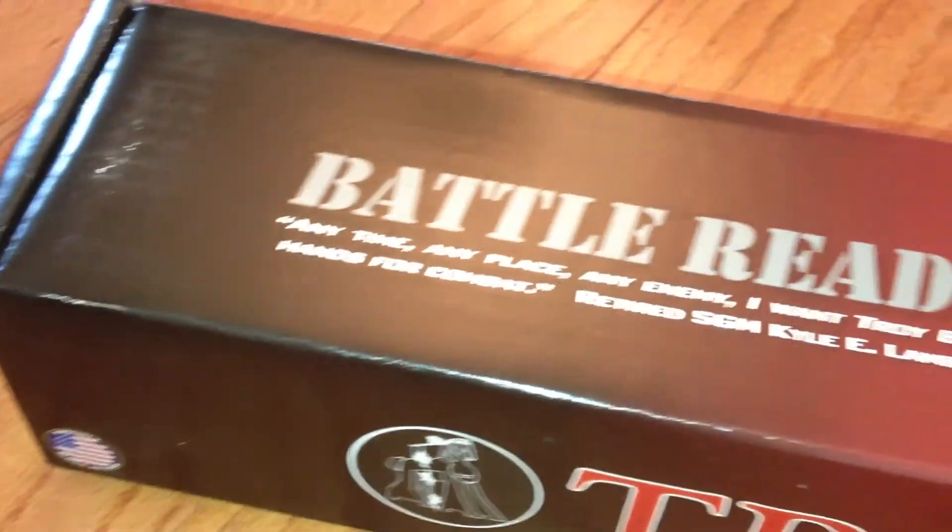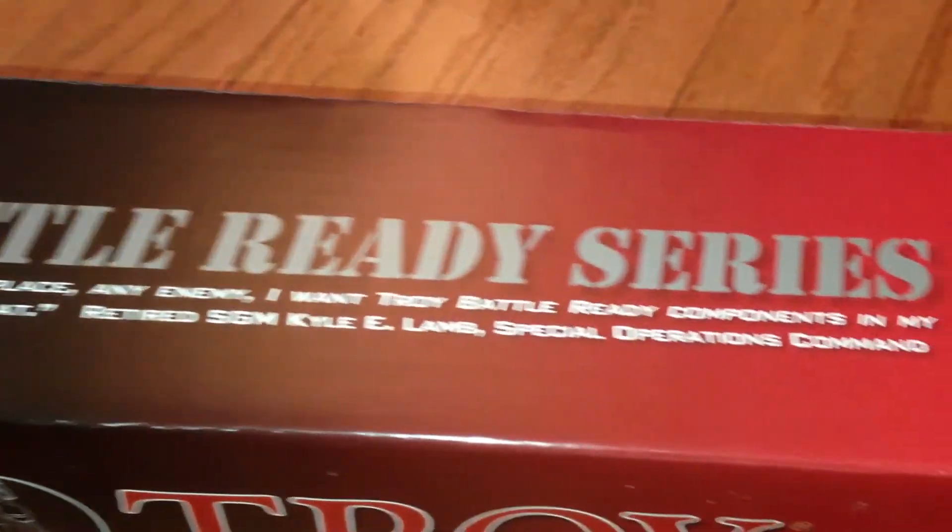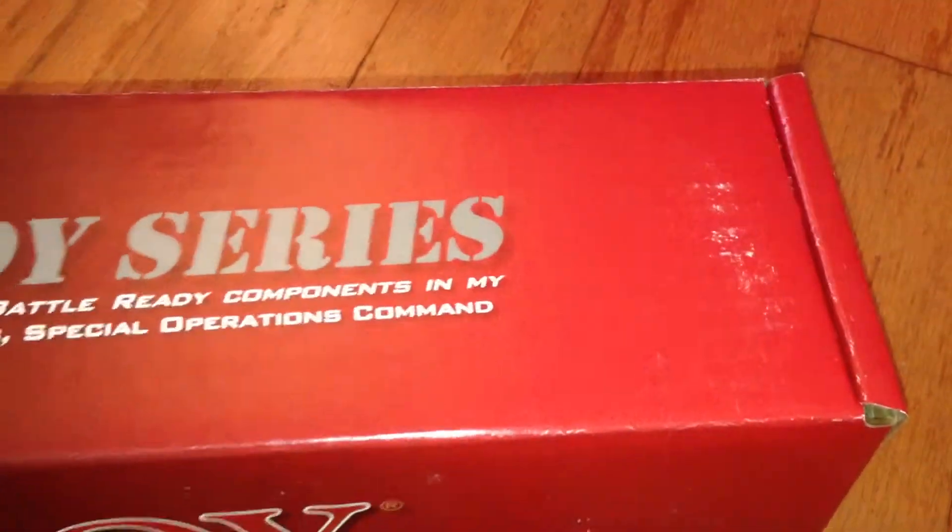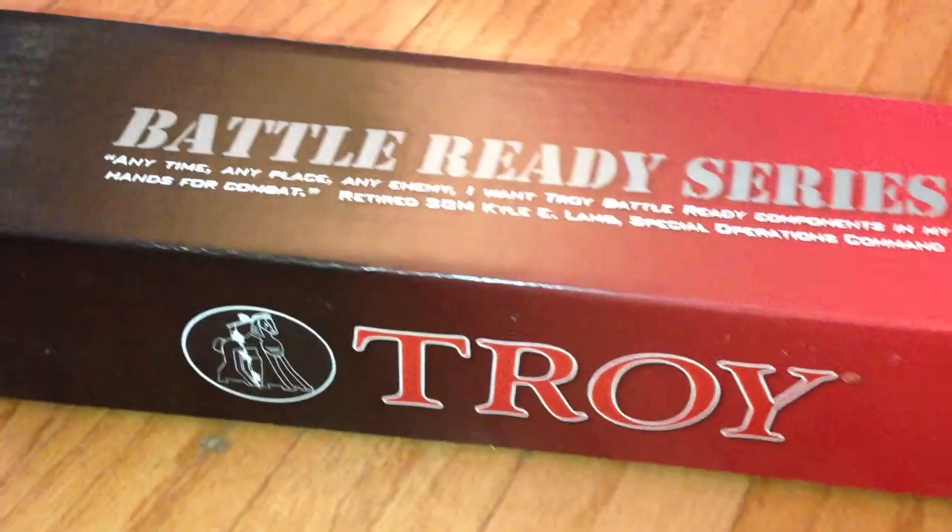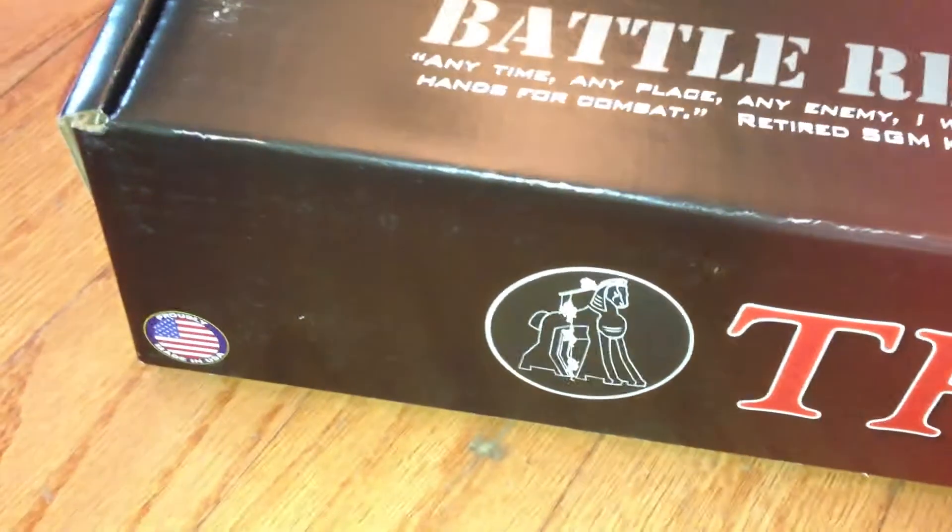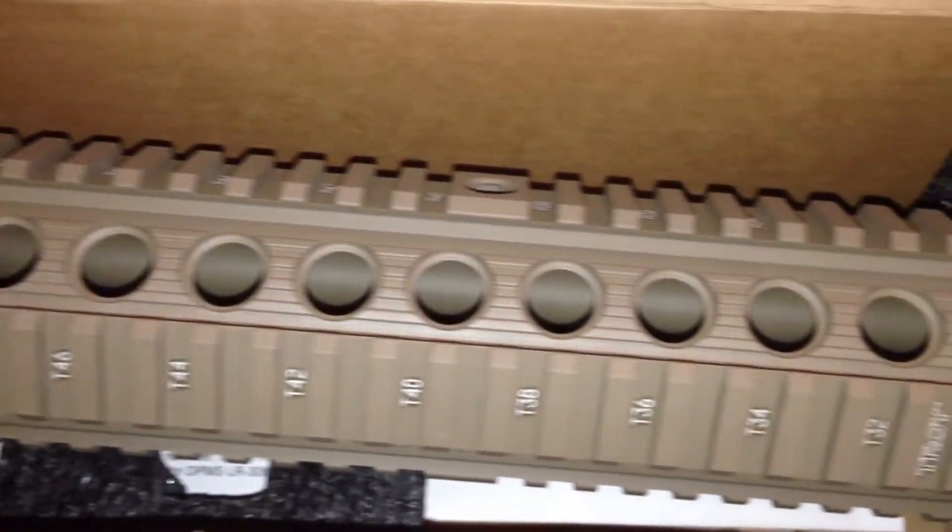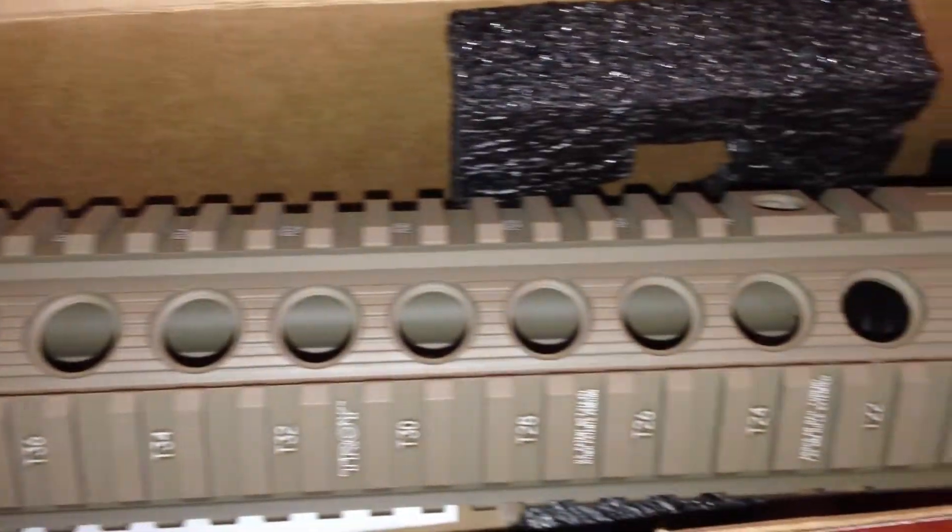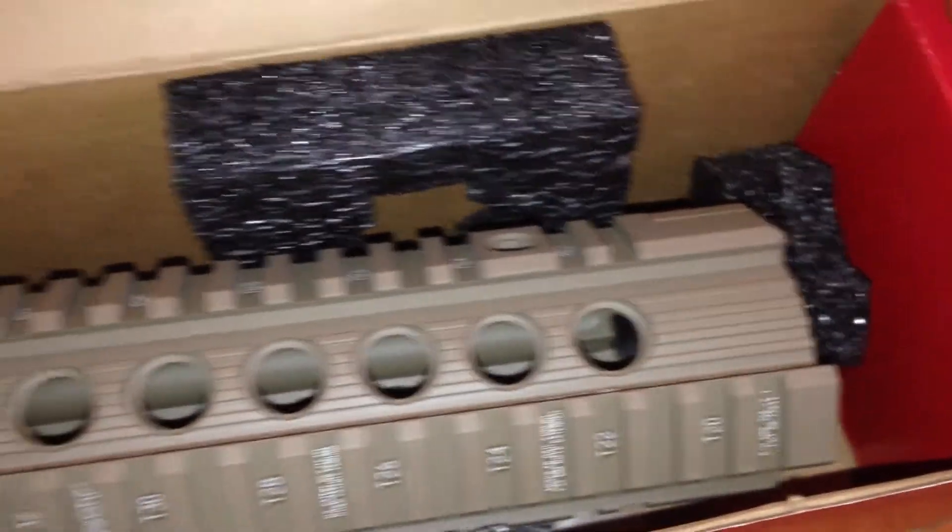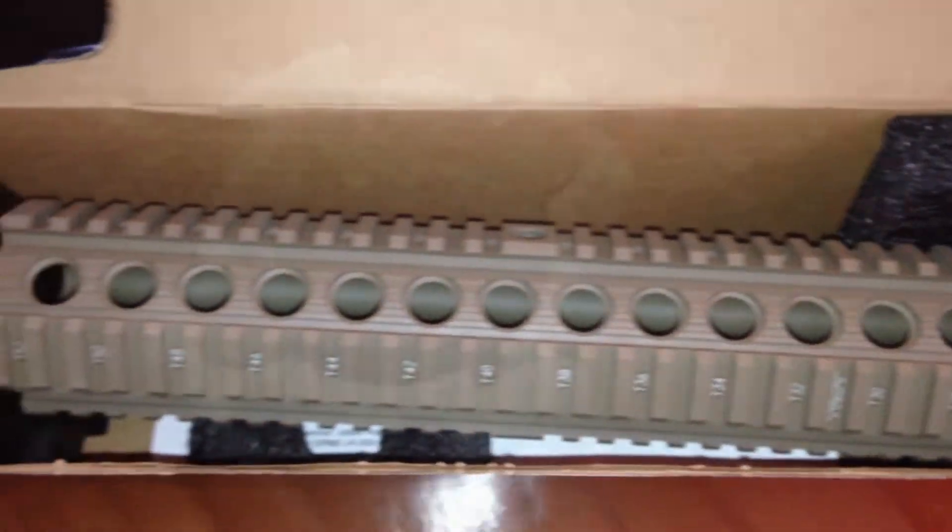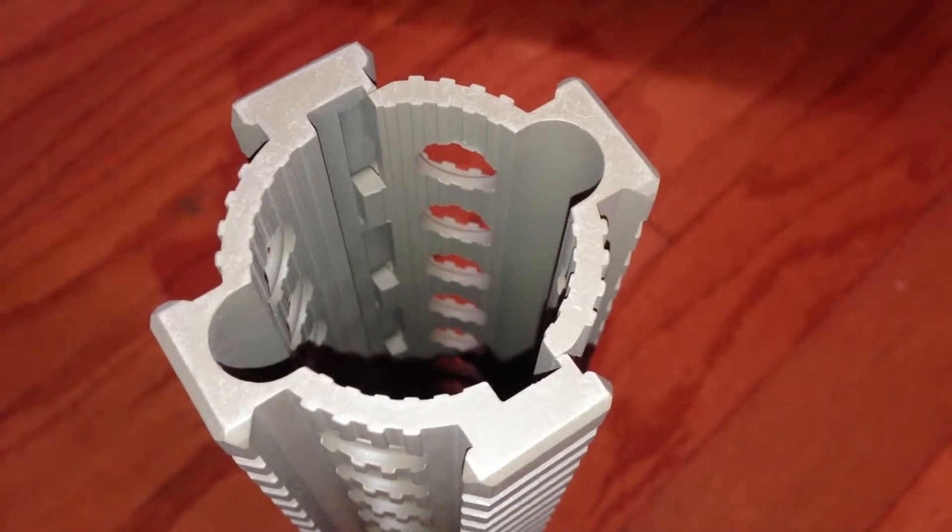Alright, it's the White Tiger Knight and this is the Troy 308 MRF. This is the battle rail Troy MRF 308, 13.8 inch, it's in flat dark earth and supposedly the strongest rail on the market.